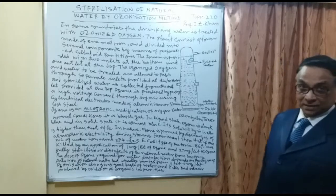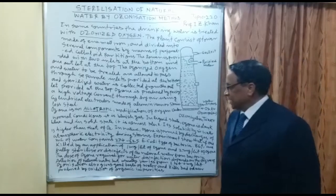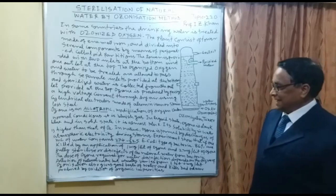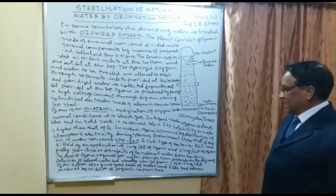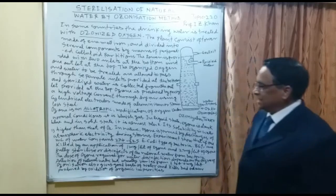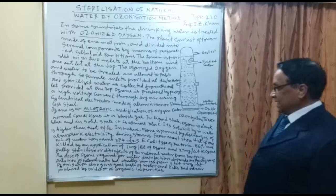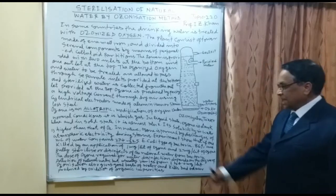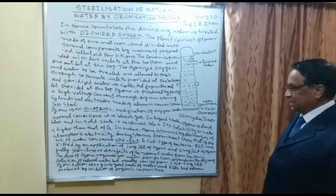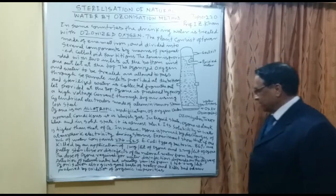Its solubility in water is high as compared to oxygen. In nature, ozone is formed by discharges of atmospheric electricity during storms. Experiments show that if one milliliter of water contains 274 to 325 E. coli bacteria, then 86 percent are killed by an application of one milligram of ozone per liter of water.